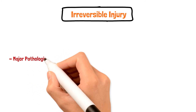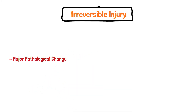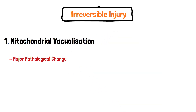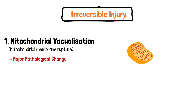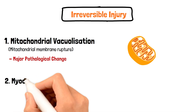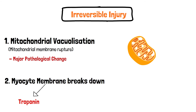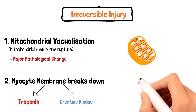The major pathological change that signals irreversible damage at the cellular level is mitochondrial vacuolization — the mitochondrial membrane ruptures and forms vacuoles. When the myocyte cell membrane breaks down, the cell starts leaking its contents, including troponin and creatine kinase, which are then detected in the blood serum.